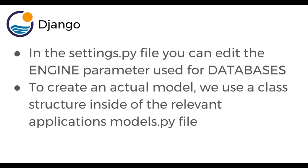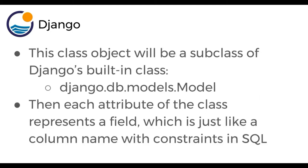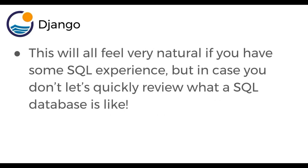In the settings.py file, you can edit the engine parameter used for databases — that's where you would actually connect to a different backend if you didn't want to use SQLite. Then to create an actual model, we use a class structure inside of the relevant application's models.py file, which we haven't actually edited yet but we will in the next lecture. This class object will be a subclass of Django's built-in class, django.db.models.model. So basically you're going to inherit from this built-in model class. Then each attribute of the class represents a field, which is just like a column name with constraints in SQL.